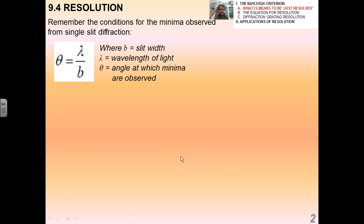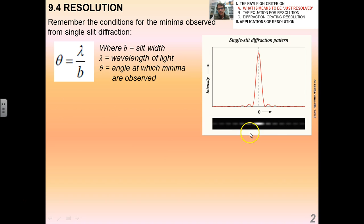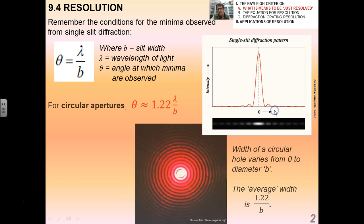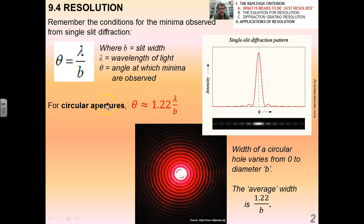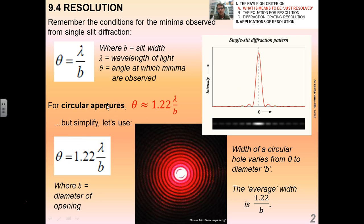If you recall the conditions for the minima observed from a single slit diffraction, we had that theta equals lambda over b, and remember b was the slit width. We had a pattern like this that matched this intensity versus theta graph.